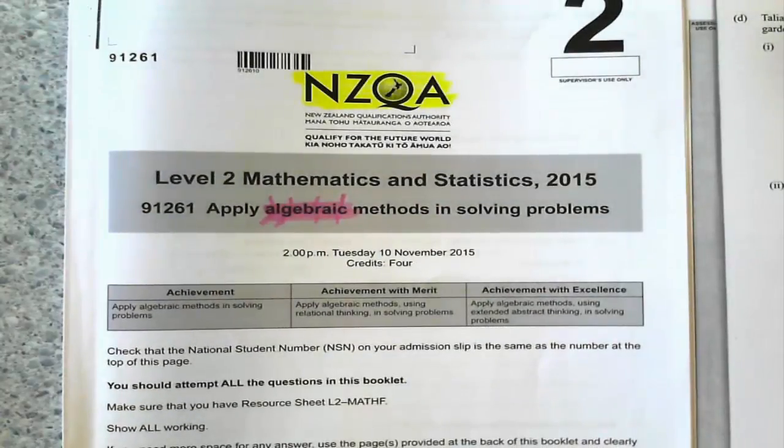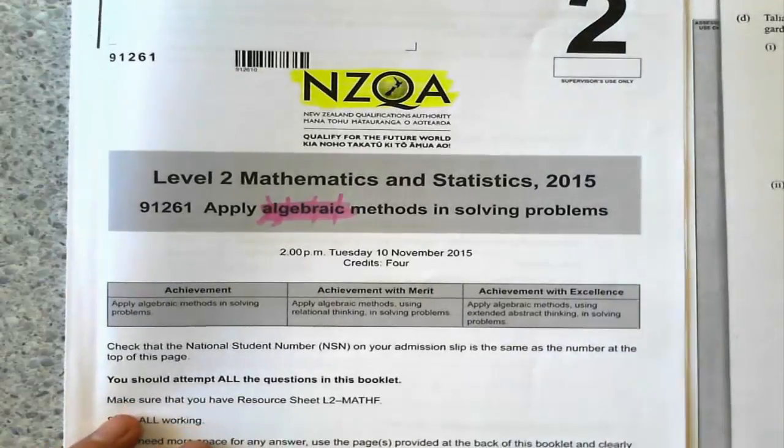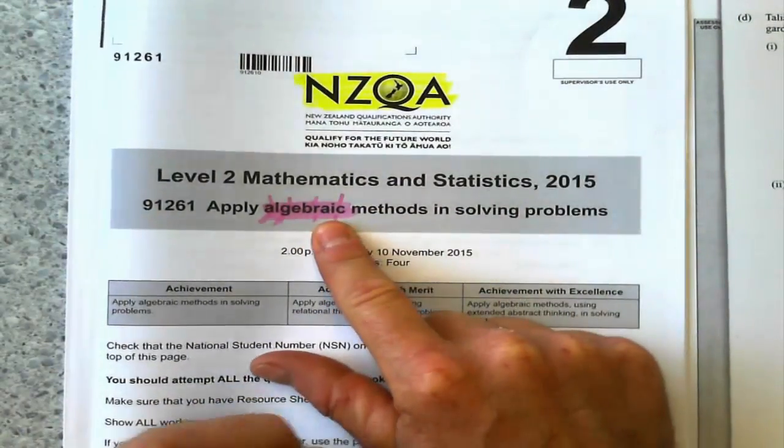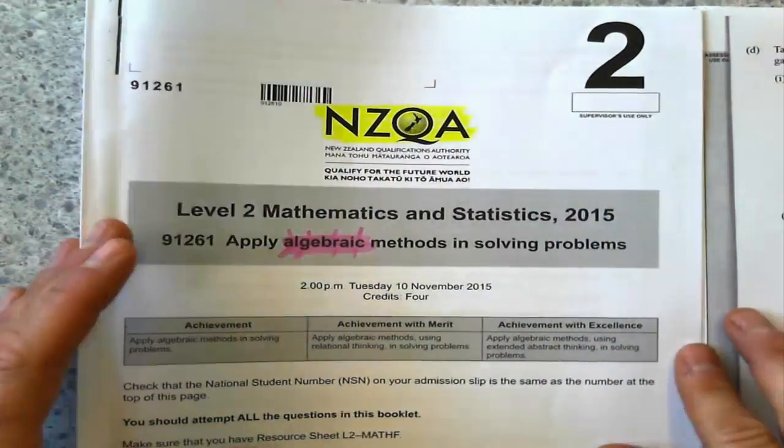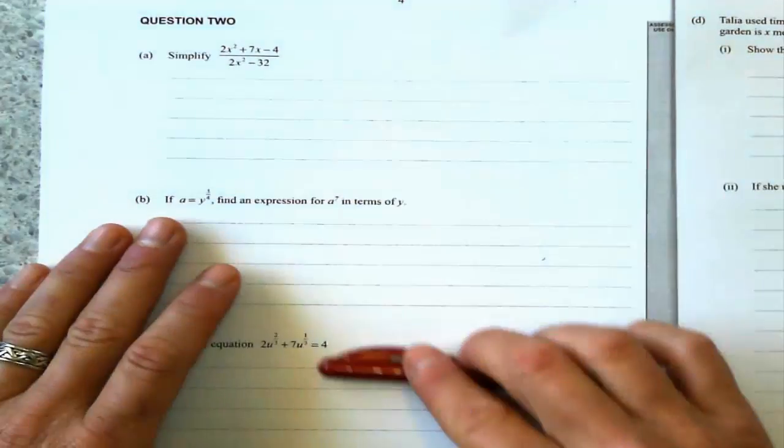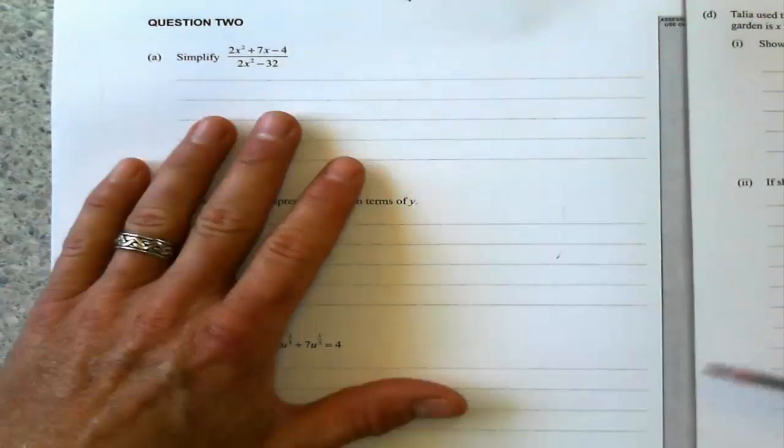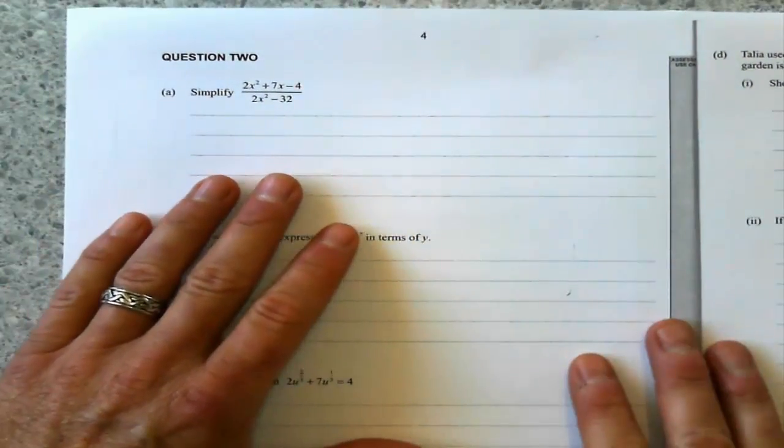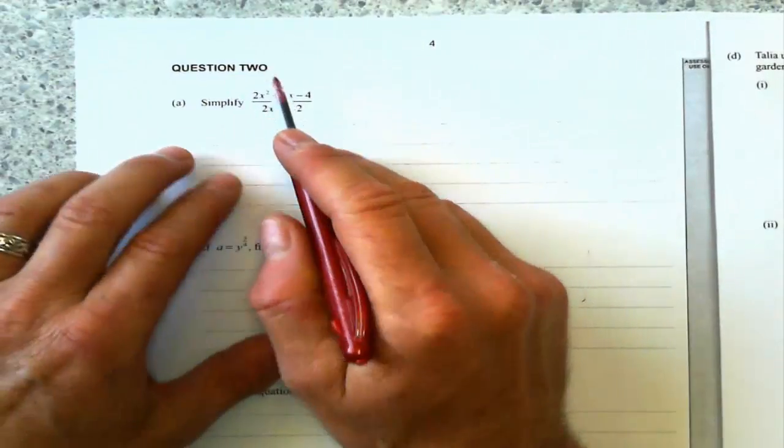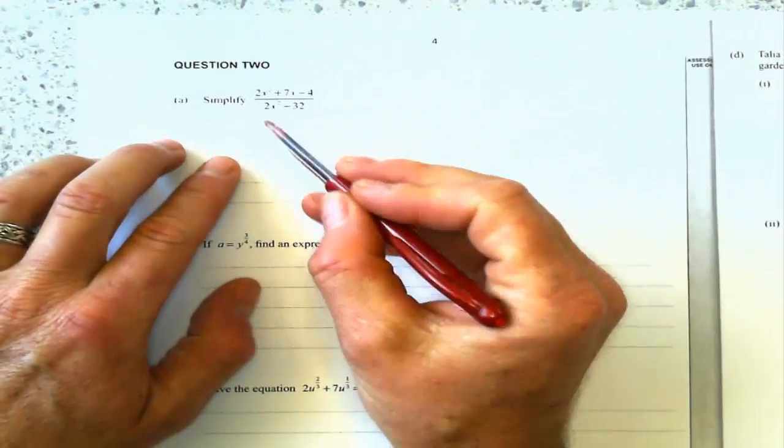Alright, thanks for the intro there. I'm going to be looking at question number 2 from the 2015 Level 2 House exam. I printed it off right here and we're just going to start going through these questions as if I were a student and see how they go. So question number 2, the first one, I should say.